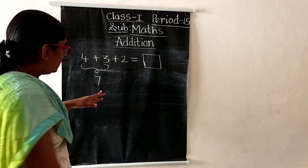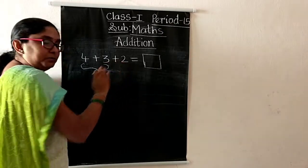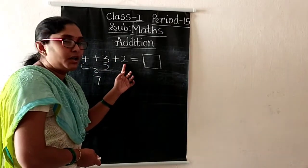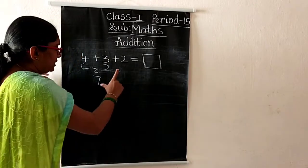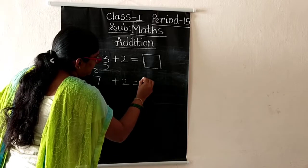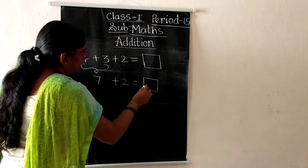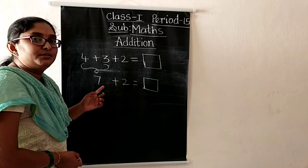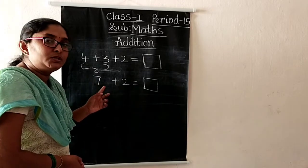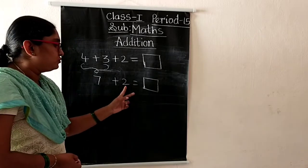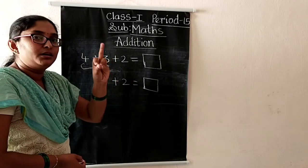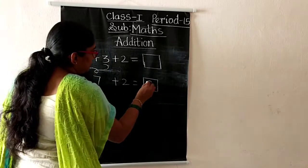Now we have to add this seven and the remaining number two. So seven plus two. Seven in the mind, take two fingers. Seven after: eight, nine. So this is the answer — nine.